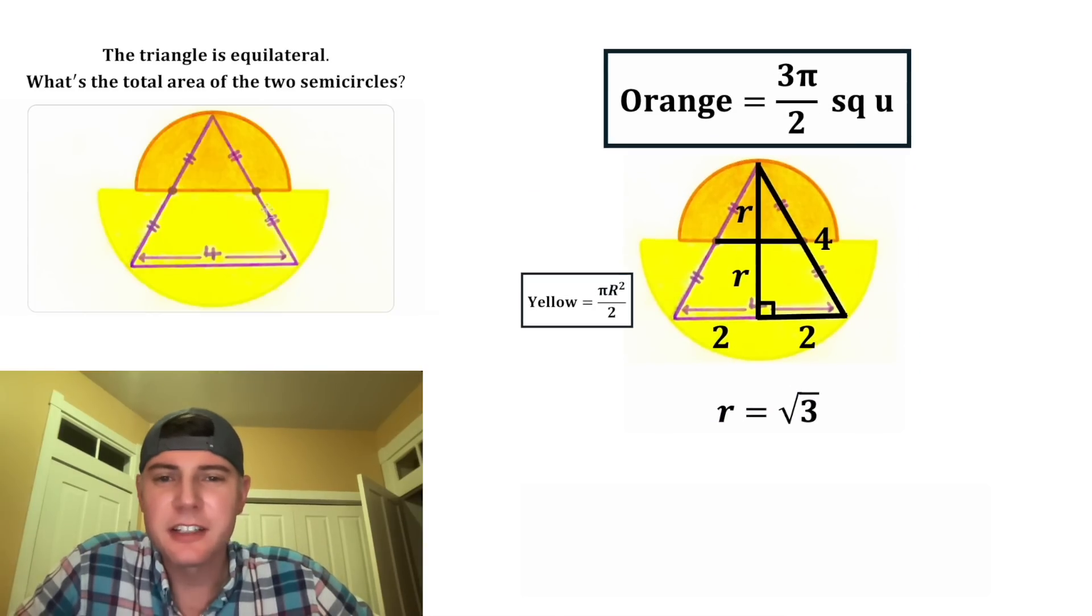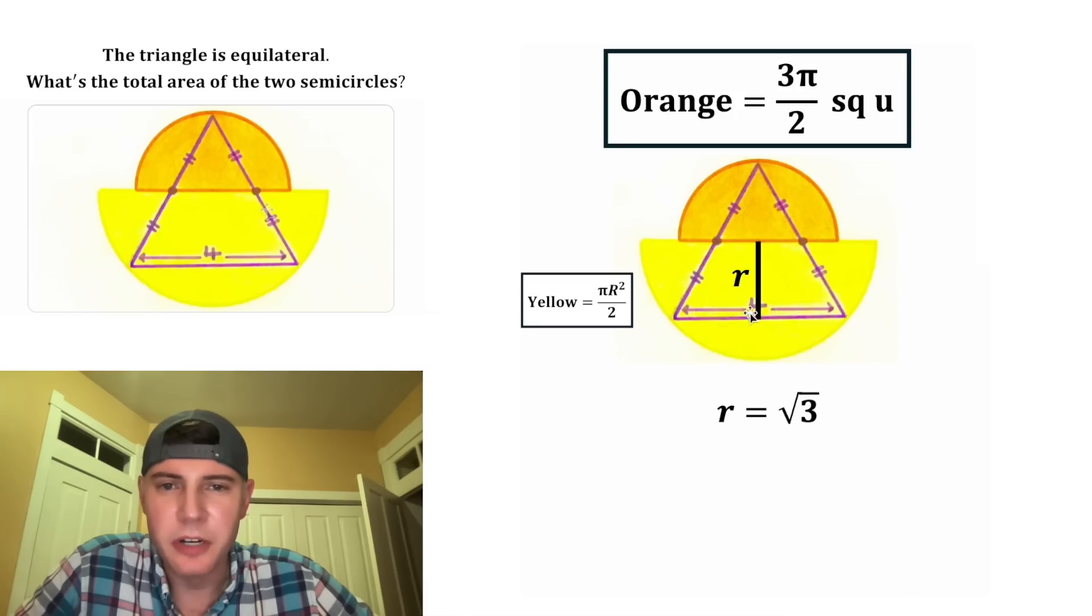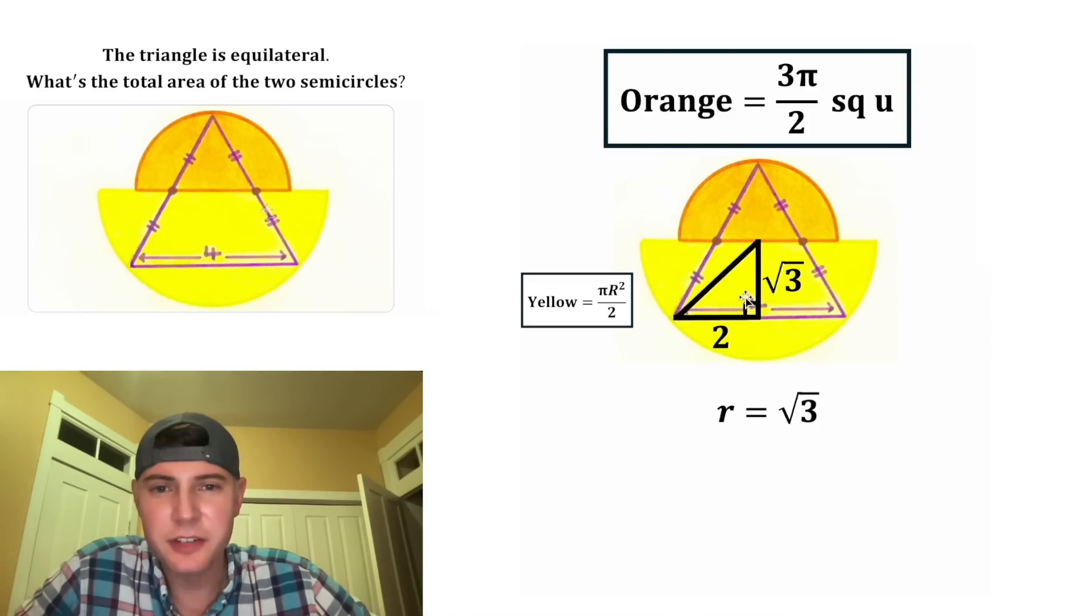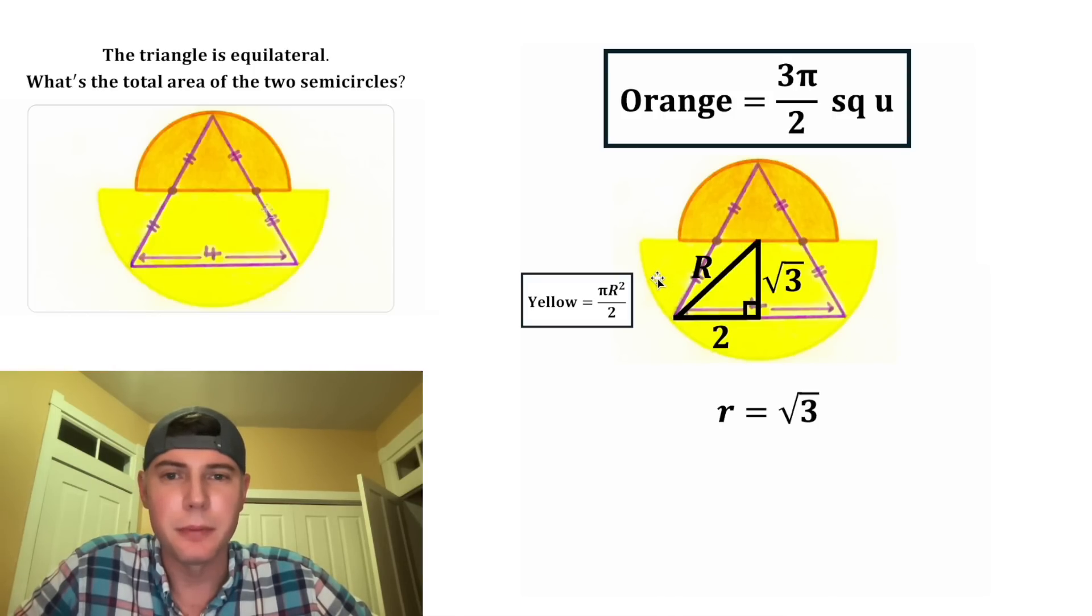Next, let's figure out this yellow area. I want to make another right triangle right here. We know that little r equals square root of 3. Let's move the label over here. Now let's create this other right triangle. We already have two sides of this right triangle. This hypotenuse is the radius of our big semicircle, so we can label this big R.